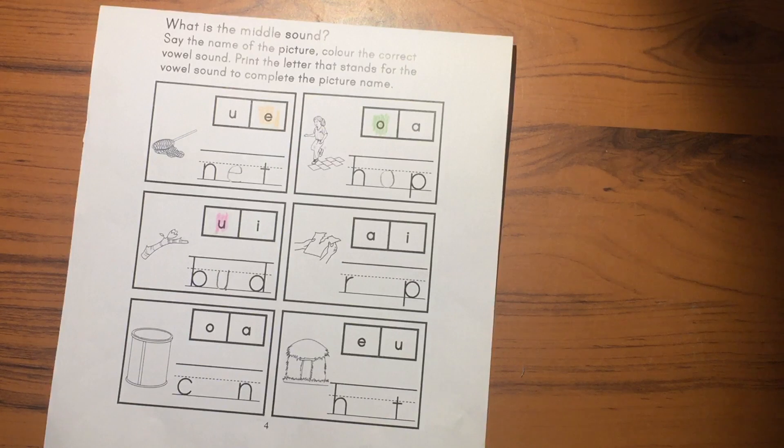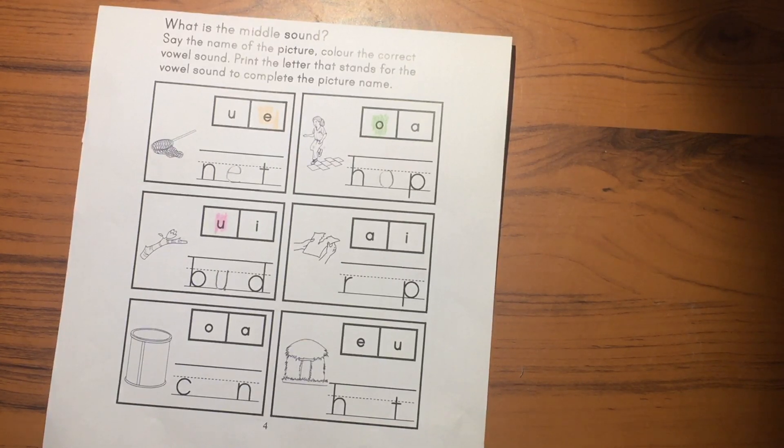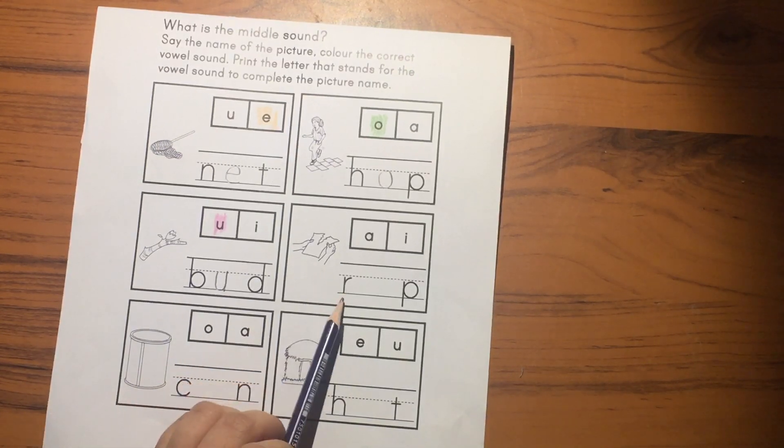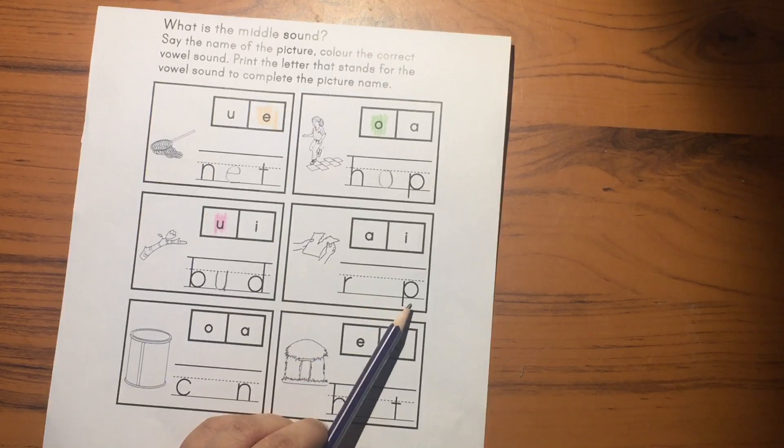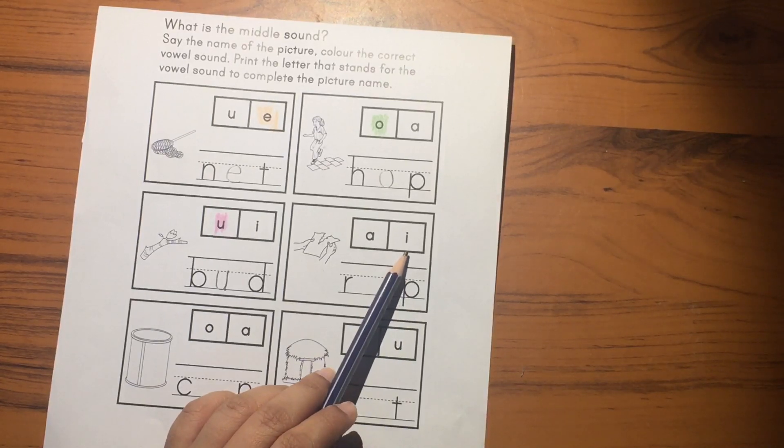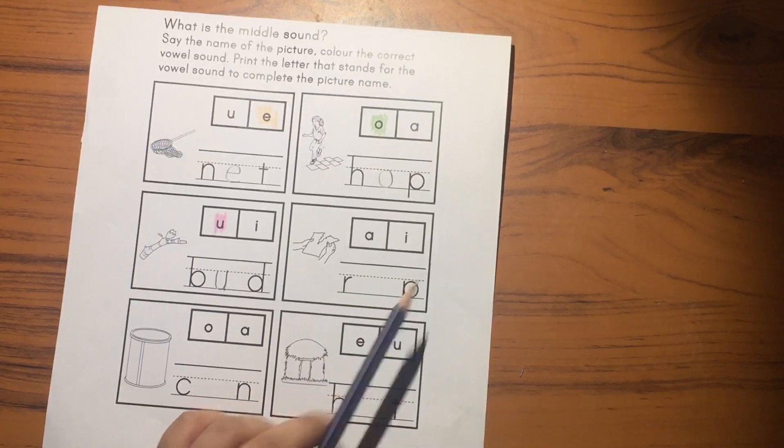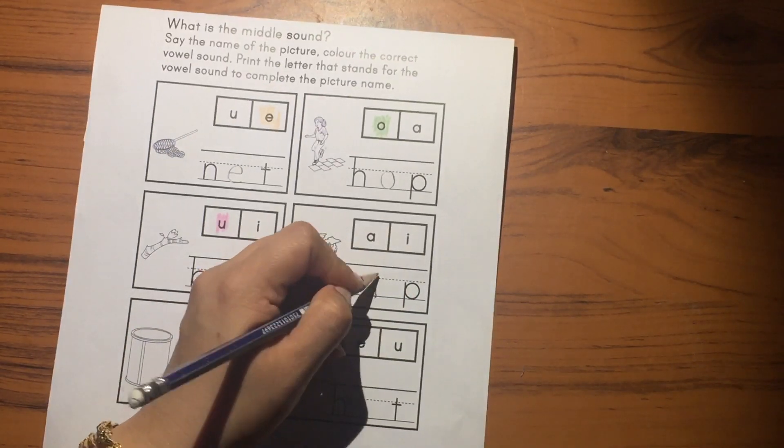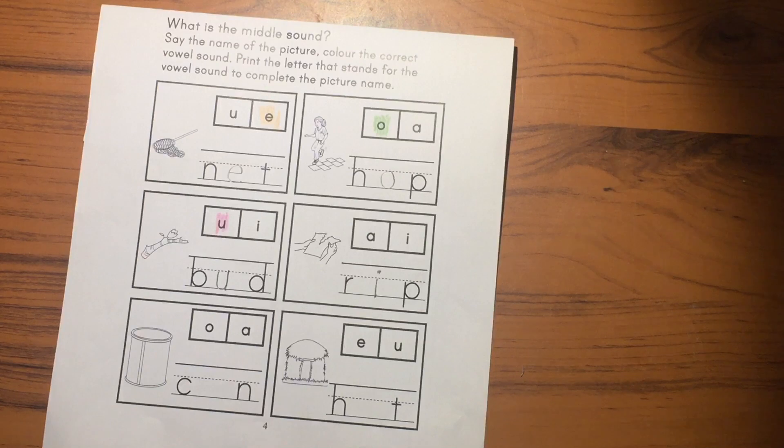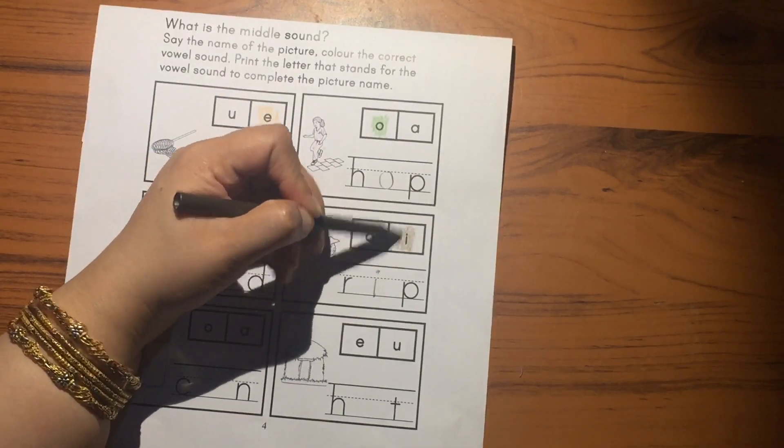The next picture is rip. Rip, R-I-P. What is coming in the middle sound? I. Rip. So you will write I here. I vowel. And you will color the I vowel.